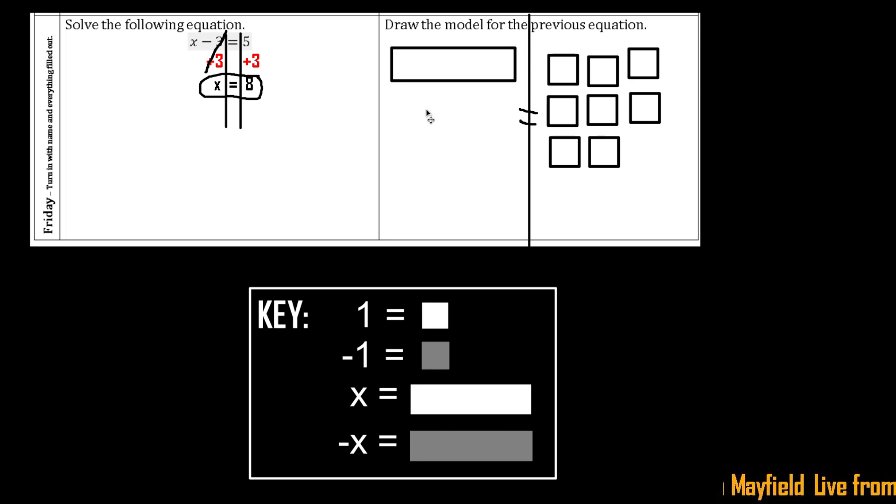Again, you should have x and then equals, and let's see how many we have. We have 1, 2, 3, 4, 5, 6, 7, 8. Alright.